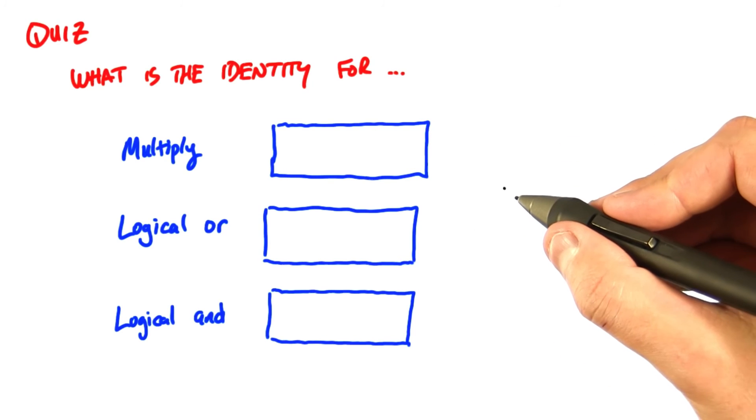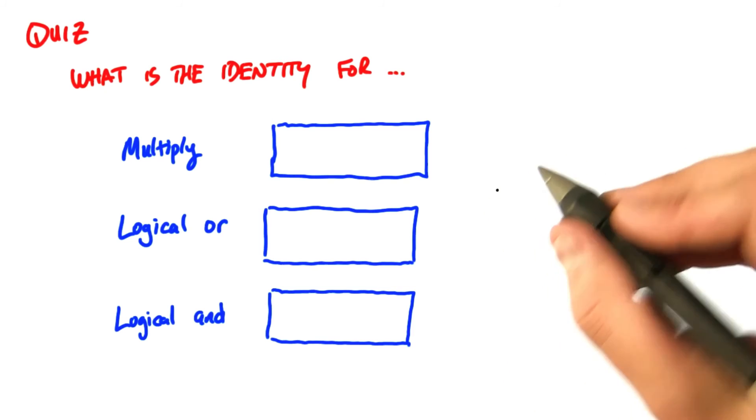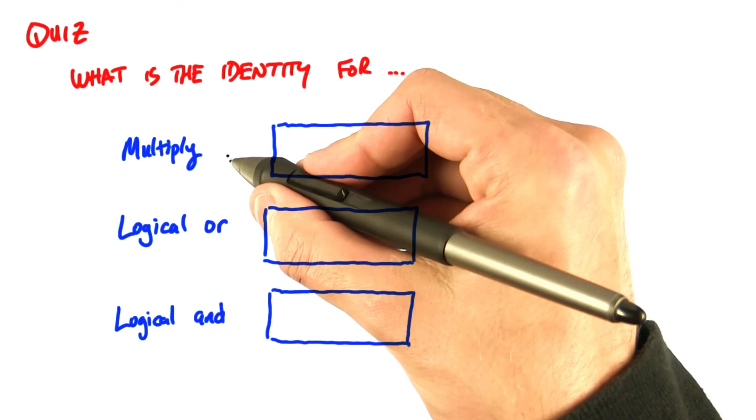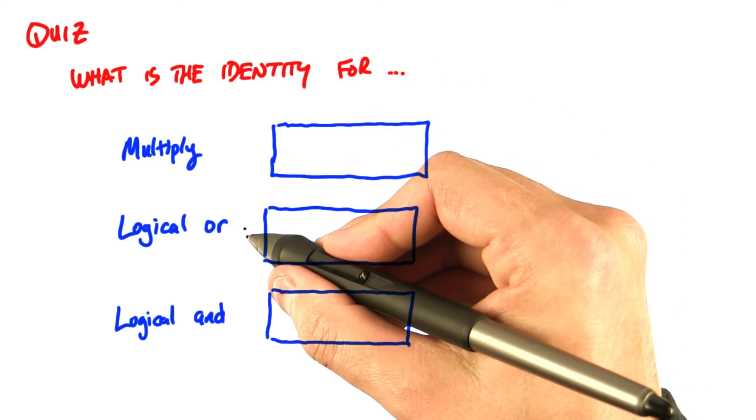So a little quiz to make sure we understand binary associative operators and their identity elements. What are the identity elements for multiplication, for the logical OR operator, and for the logical AND operator?